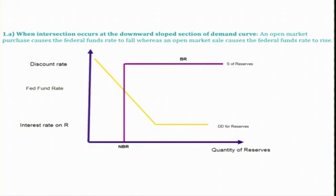Here is the graphical representation. Our assumption is that when the intersection occurs at the downward-sloped section of the demand curve. What we are going to show here is that an open market purchase causes the Fed fund rate to fall, whereas an open market sale causes the Federal fund rate to rise. The initial equilibrium position is where the demand curve intersects the supply curve, giving us the equilibrium Fed fund rate (FFR), with the corresponding equilibrium quantity of reserves supplied and demanded.